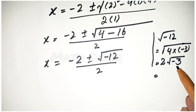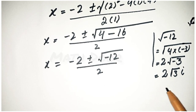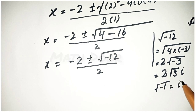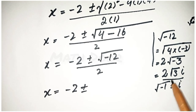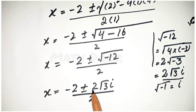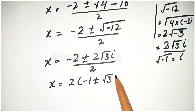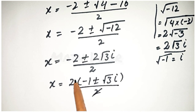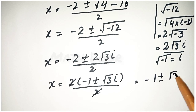Now, square root of minus 3 is equal to square root of 3 times iota, because square root of minus 1 is equal to iota. So we put this value in and write the equation as minus 2 plus or minus 2 square root of 3 iota, over 2. Taking 2 as common, x is equal to 2 times minus 1 plus or minus square root of 3 iota, over 2. This cancels, and our second and third values are x is equal to minus 1 plus or minus square root of 3 iota.